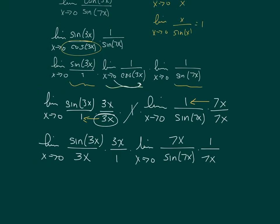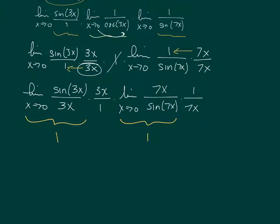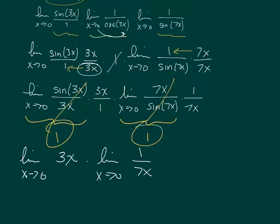So by my definition back up here, I said that that limit equals 1 and this limit equals 1. So what I'm left with is the limit as x approaches 0 of 3x times the limit as x approaches 0 of 1 over 7x. So remember, these pieces became 1, so that's why they disappeared.